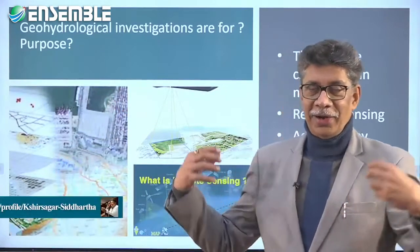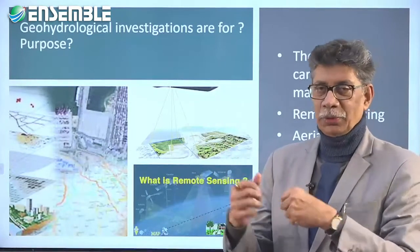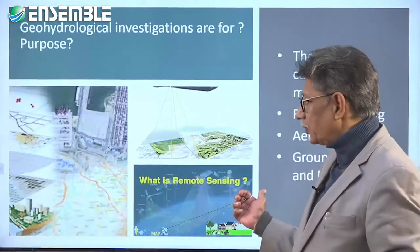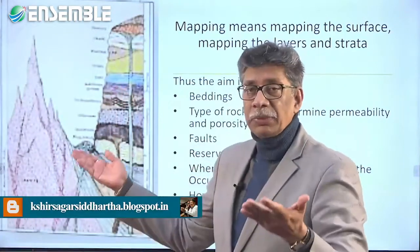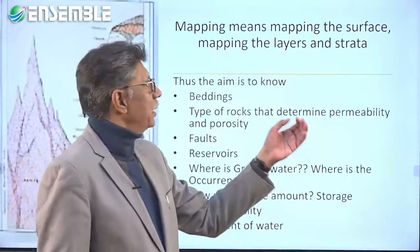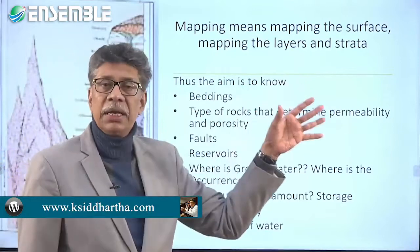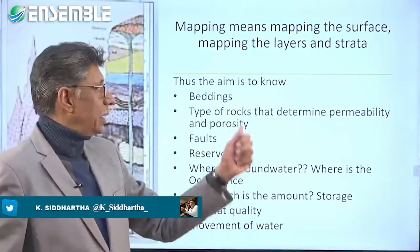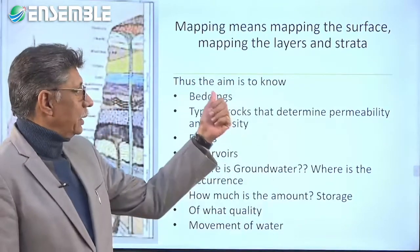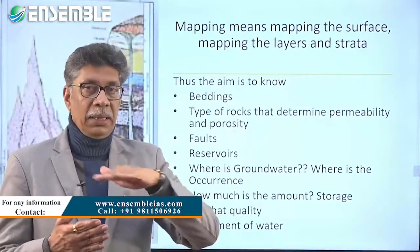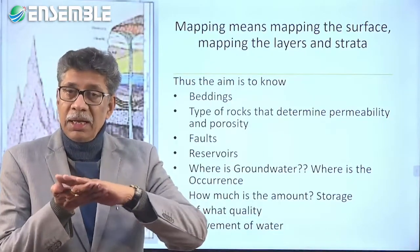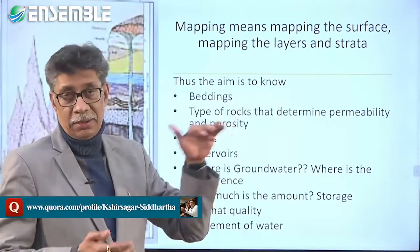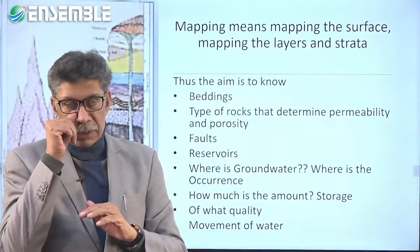Geologists go to different places, pick up samples, and map the entire region. In trying to map the entire region, you have to map a variety of layers. Mapping means mapping the surface, mapping the layers, and mapping the strata — first, second, third, fourth, fifth, sixth strata — and the layers of which each stratum is made up.